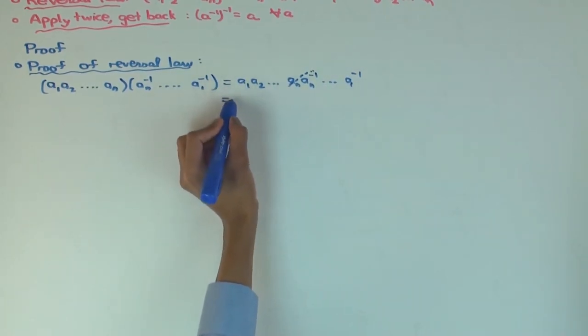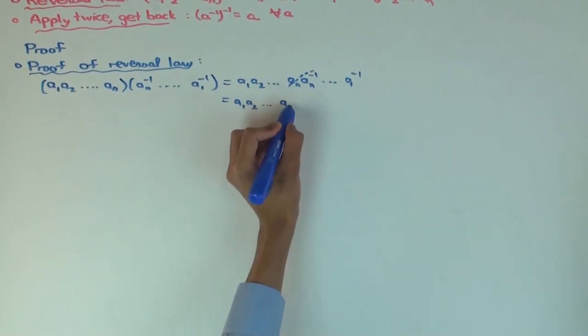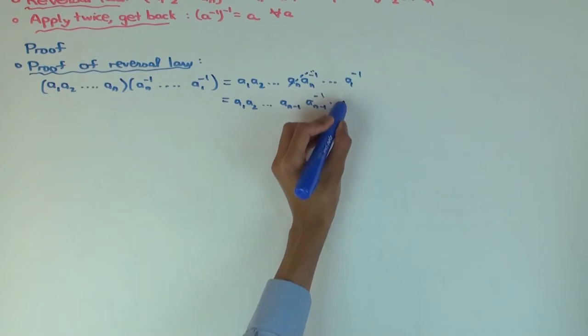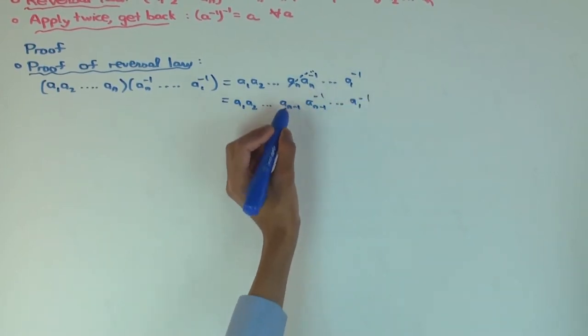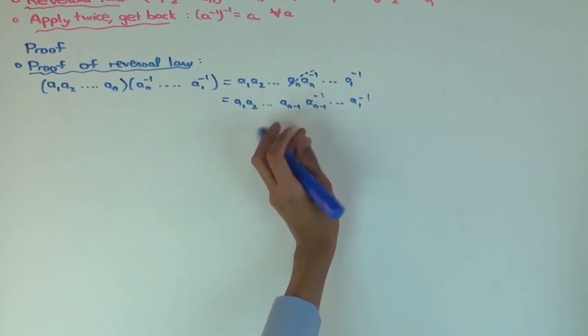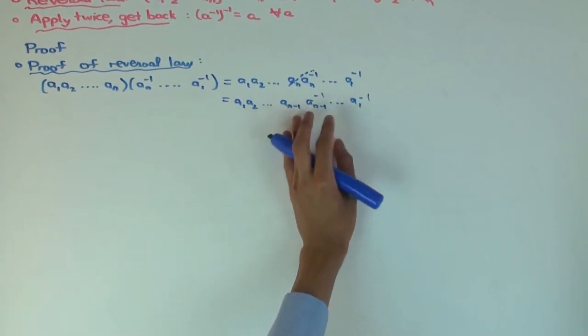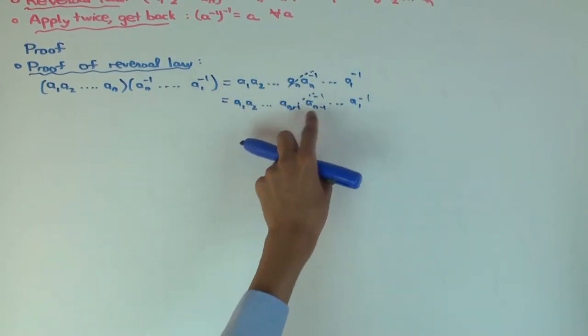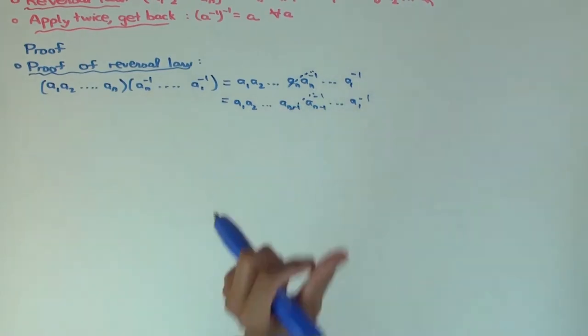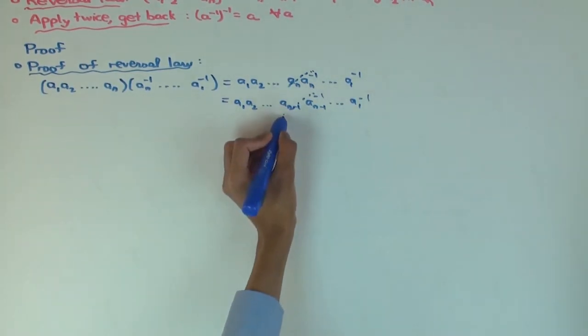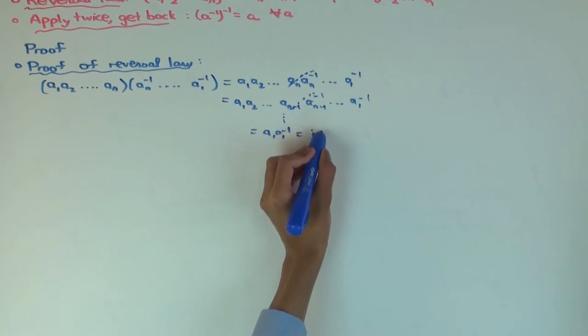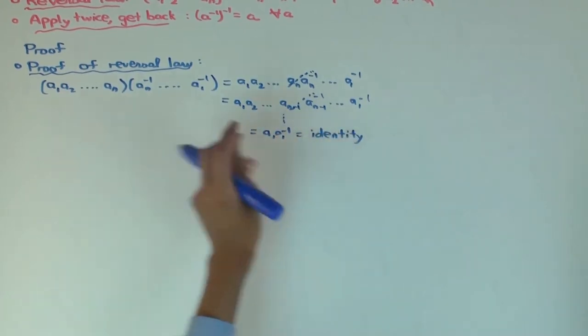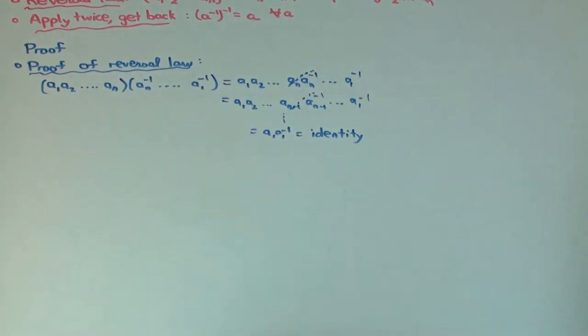...then you'll have a_1, the product will just go up to a_n minus 1, and the inverse will just start from a_n minus 1 inverse. Now, again, these two you can cancel with each other, that the product becomes identity, and because identity doesn't affect anything, you can just drop it from the word. So whenever something and its inverse appear next to each other, you can sort of cancel them. And you can keep going like this, till your final step will be a_1, a_1 inverse, which is the identity. So you see that when you multiply these two, you get the identity, because you basically sort of cancel them one at a time.